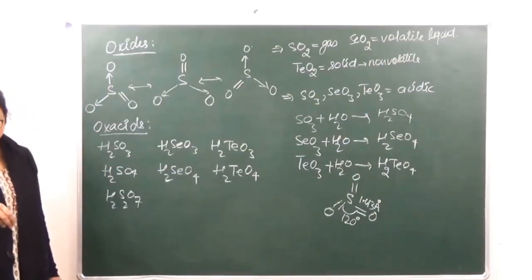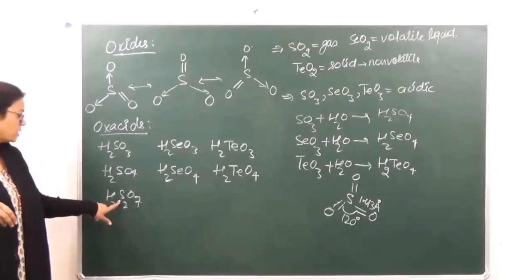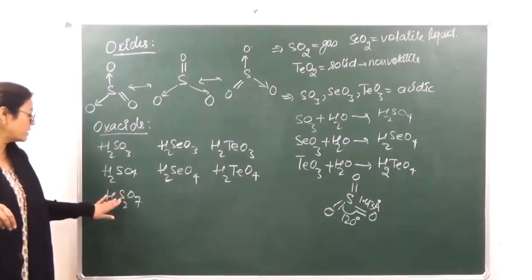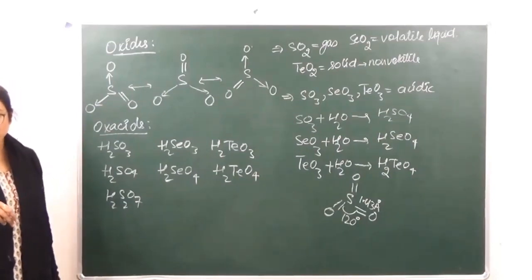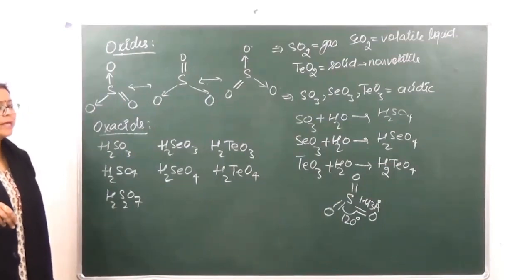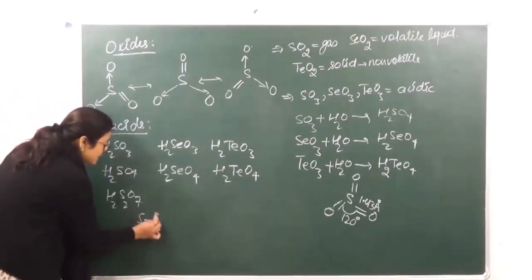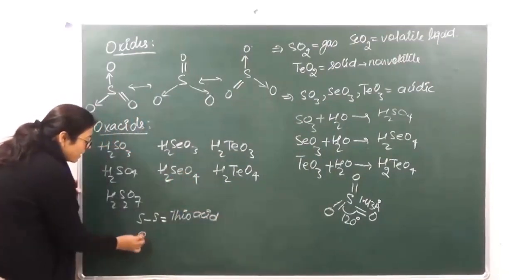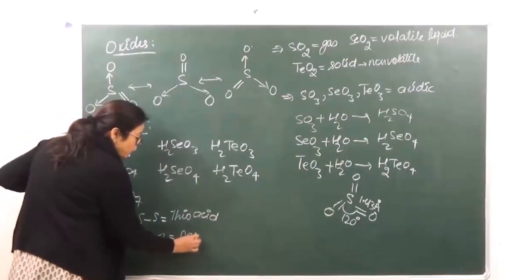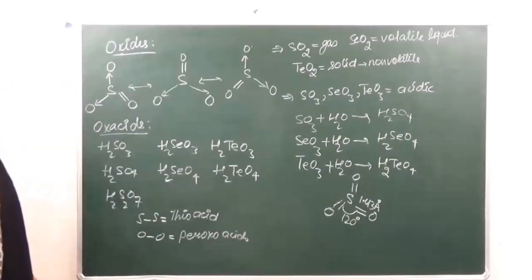When talking of oxa acids, if there is an S-S linkage present, those acids are known as thio acids. And if there is an O-O linkage present, then they are known as peroxo acids.